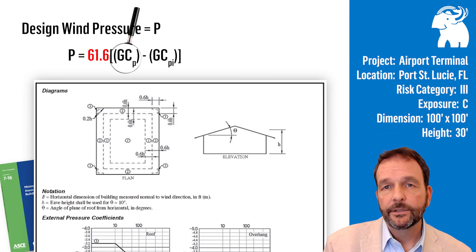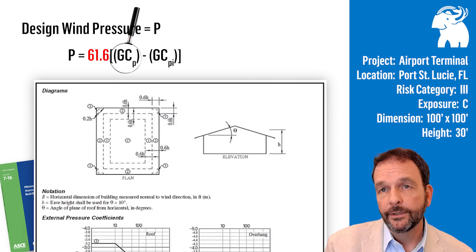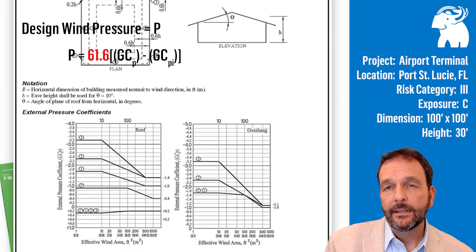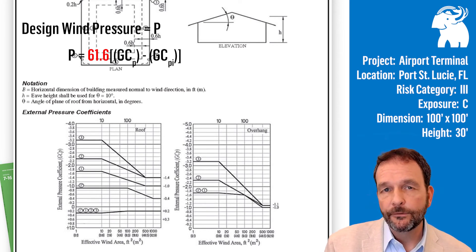Let's take a closer look at this figure. There's a roof map here that shows the four zones on our roof: zone 1 prime, 1, 2, and 3. And there's a graph that we use to determine the external pressure coefficients for each of the four roof zones.